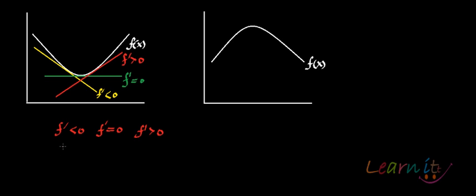How will the slopes of these slopes change? The slopes of these slopes — the double derivative — for this kind of function would be greater than zero. And that is what convexity is. The slope of the slope is changing; it is moving from downwards to upwards. If the double derivative is greater than zero, this becomes a convex function.